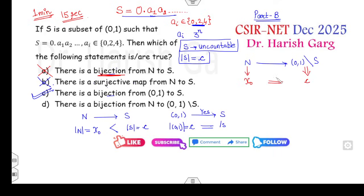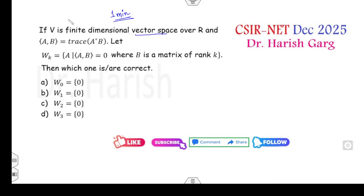Look at the last option: whether there is a bijective map from N to (0,1) minus S. The cardinality of the codomain is c, cardinality of N is aleph naught. Both are not equal, so there is no bijective map. The right option is only C. This is only a memory-based question. If somewhere one-one was asked, you check whether the cardinality is less than and accordingly check whether correct or wrong.